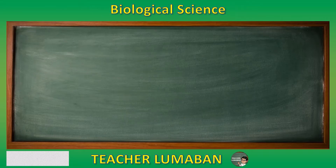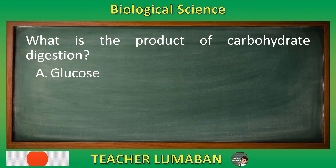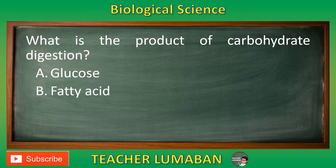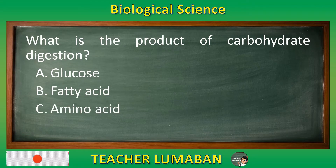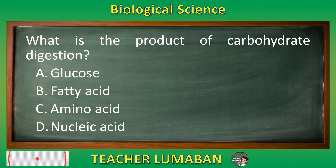What is the product of carbohydrate digestion? Letter A: Glucose. Letter B: Fatty Acid. Letter C: Amino Acid. Letter D: Nucleic Acid. Choose the suitable answer based on the given choices in 5 seconds.